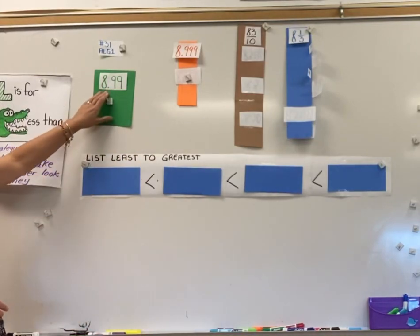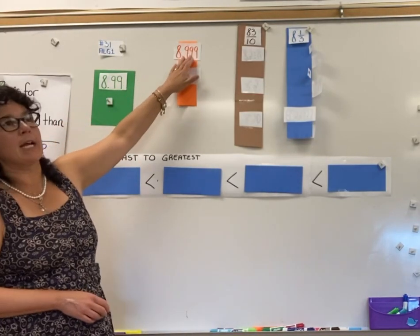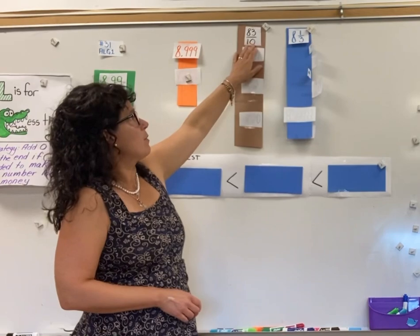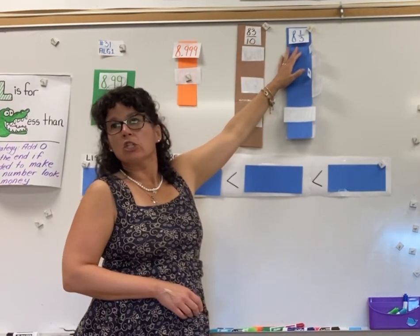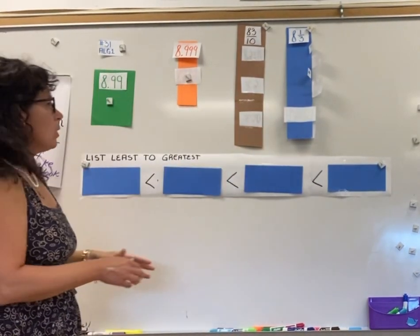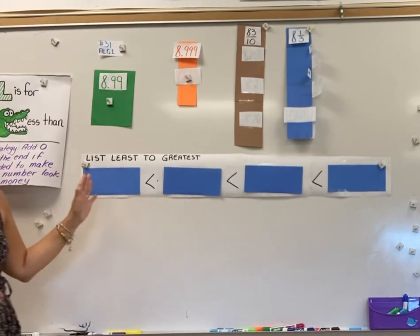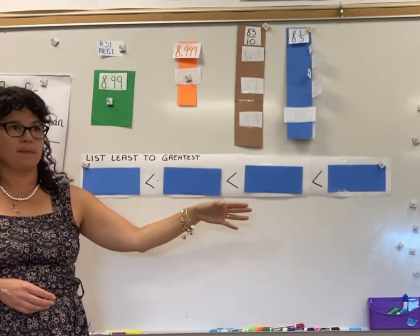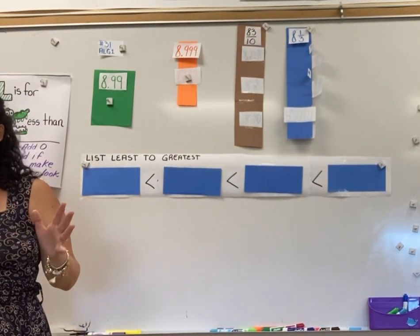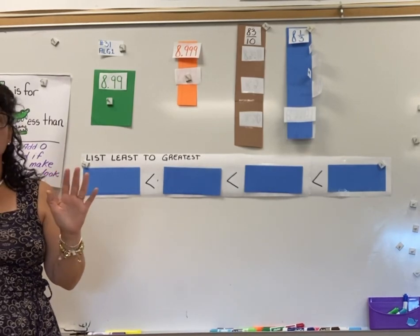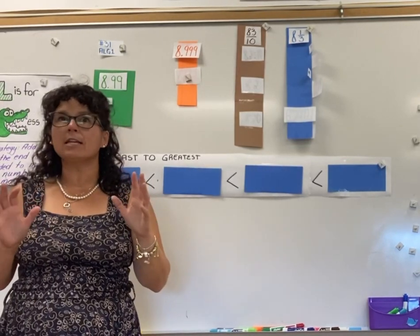We have four different numbers up here: 8.99, 8.999, 83 over 10, and 8 and 2 thirds. We want to put these in order from least to greatest. We're going to start with the decimals, and my strategy is turning everything into money.